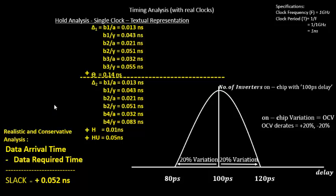We'll start with clock pull-in. To achieve worst-case analysis for hold, we need to bring the data arrival time as low as possible and increase the data required time as high as possible. If the design meets this worst-case slack, it will meet timing under any condition on the chip.